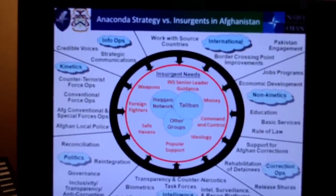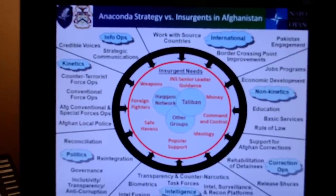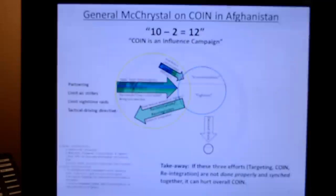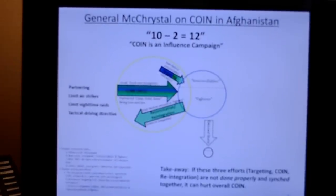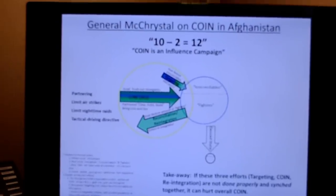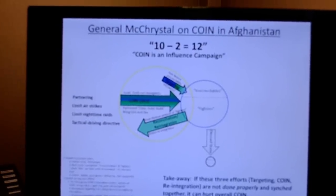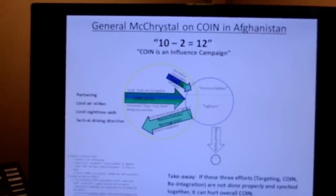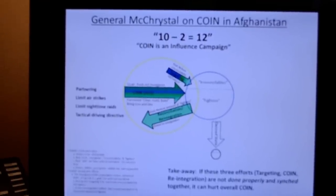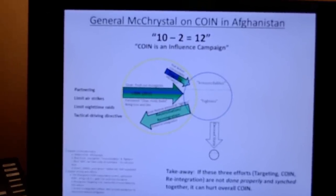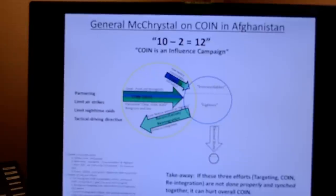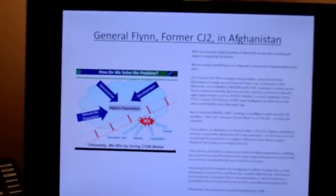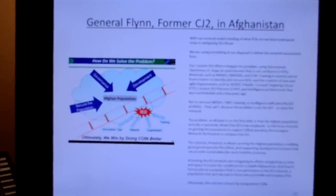This is another example of a presentation diagram — this is General McChrystal's description of the operational environment, articulating his understanding and visualization. This next one is General Flynn, who at the time was the top intelligence officer in the coalition in Afghanistan.